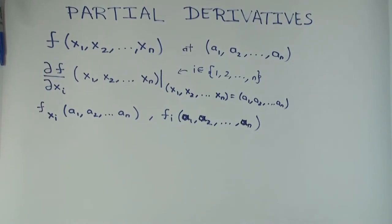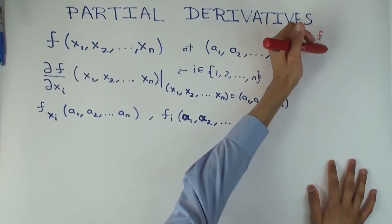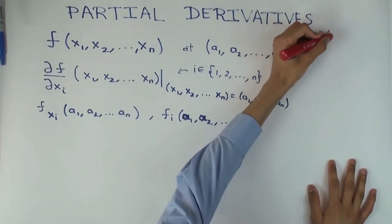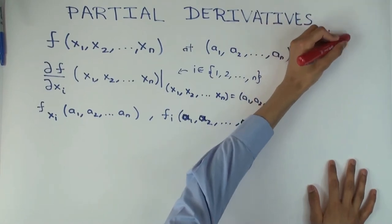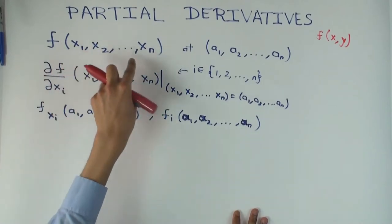let me write that down here, you had a function of two variables, x and y, right, and I call the variables x and y. Now I'm calling them x1, x2, so on xn, because I don't know how many are there.